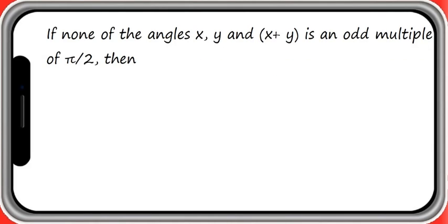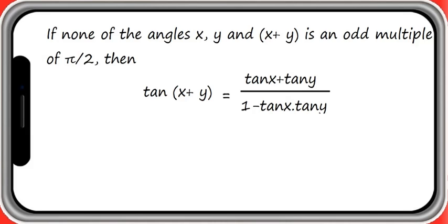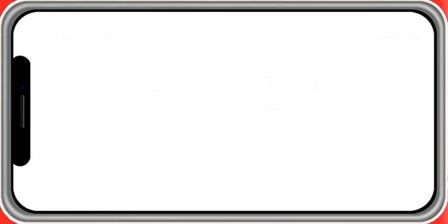The condition for x, y and x plus y is given here. If none of the values of x, y and x plus y is an odd multiple of pi by 2, then tan of x plus y is equal to tan x plus tan y divided by 1 minus tan x into tan y. Similarly, tan of x minus y is equal to tan x minus tan y divided by 1 plus tan x into tan y.